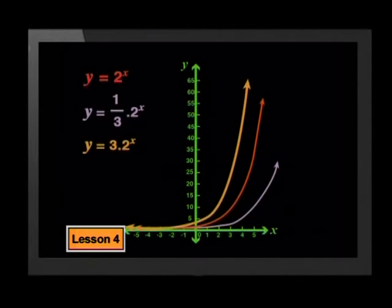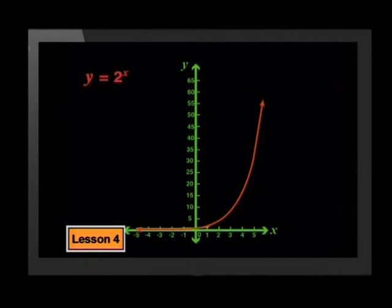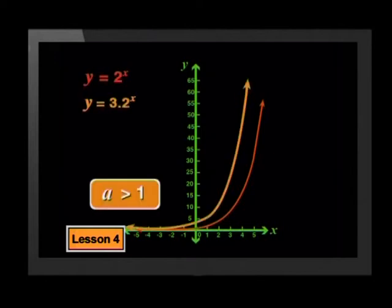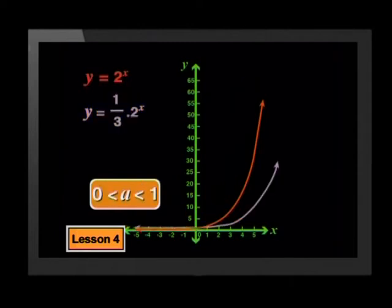So far we have only used a base value of 2 and tested the effect of different positive a-values — we tested the effect of 3 and the effect of one third. Now we can generalize the effect of a on the parent graph of y equals 2 to the x. For a greater than 1, the parent graph is stretched vertically away from the x-axis by a factor of a. For a between 0 and 1, the parent graph shrinks vertically toward the x-axis by a factor of a.